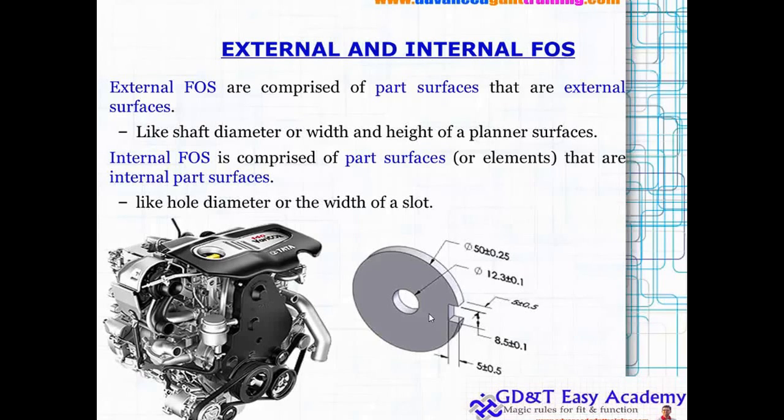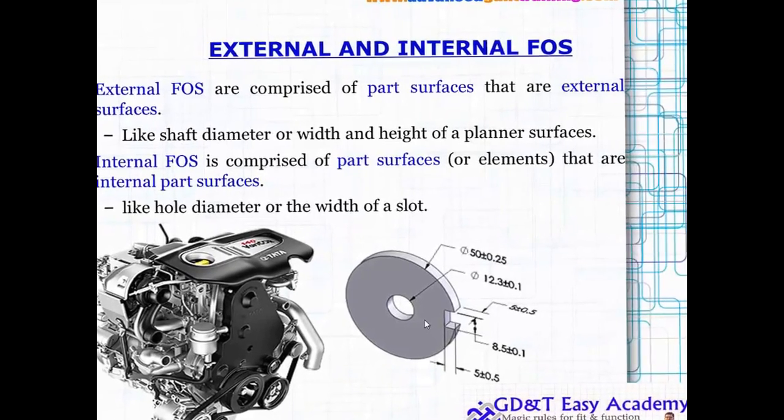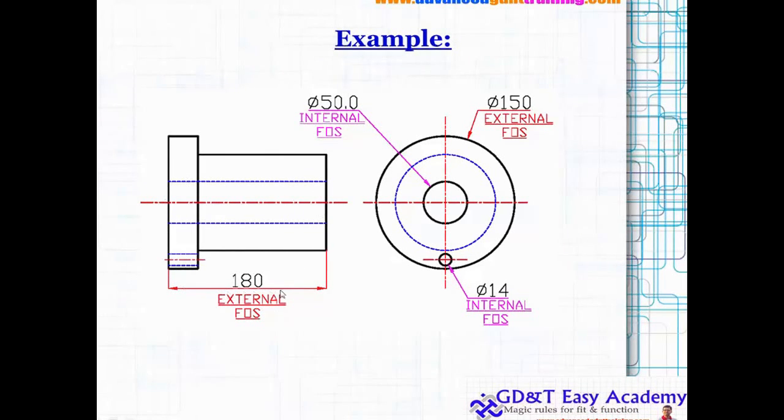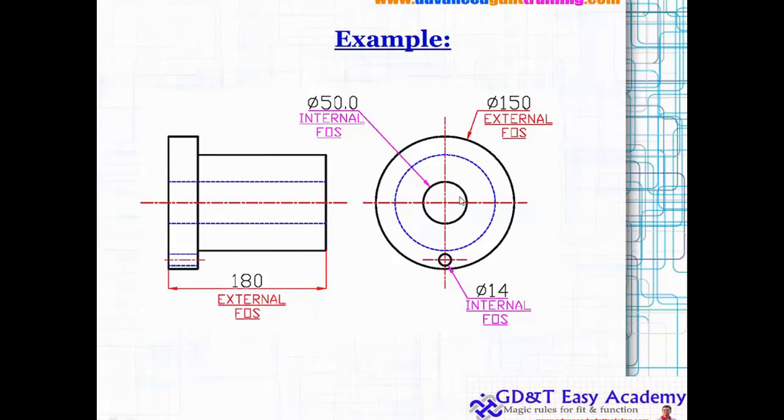For interpreting your FOS, let us look at this particular example. Here you can see this particular width, outer outer is your external feature of size, whereas this hole diameter or maybe this big hole diameter, all are the internal FOS. And what about the diameter of the external ring? That is also the external FOS.